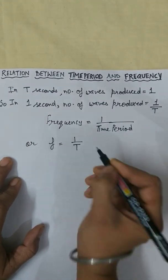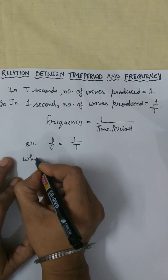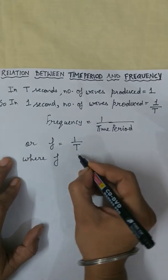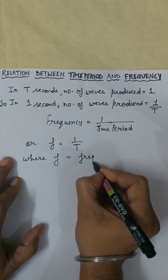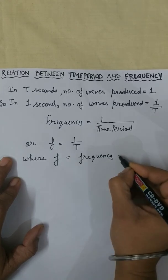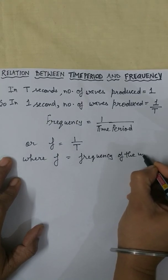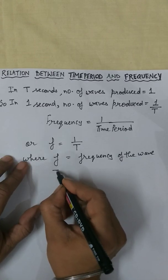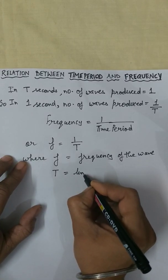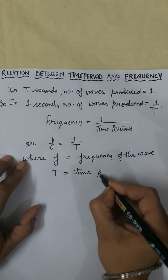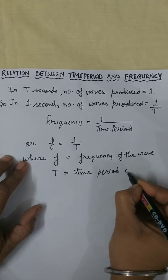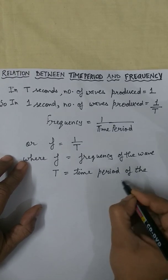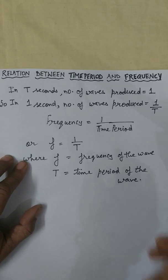F is equal to 1 upon T, where F stands for frequency of the wave and T stands for time period of the wave. That's it.